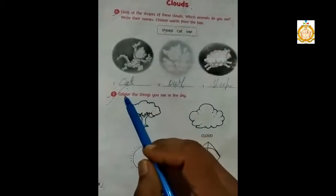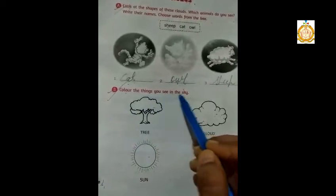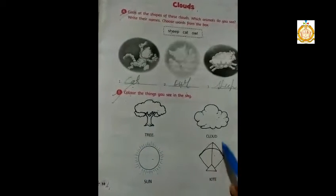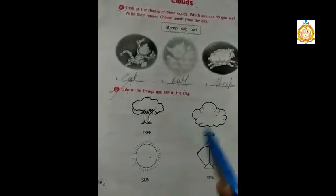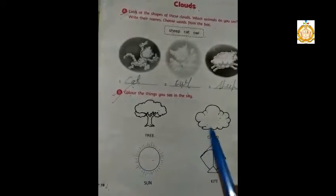Next exercise B: Color the things you see in the sky. There are some pictures. What you see in the sky? You see clouds, sun, and sometimes you see kites also. So we will color those three things.